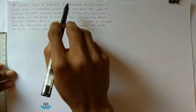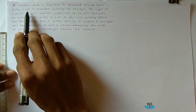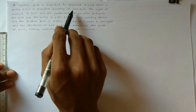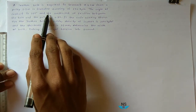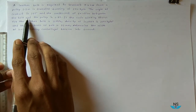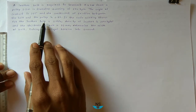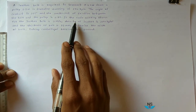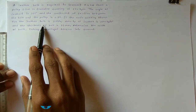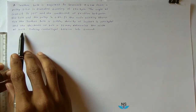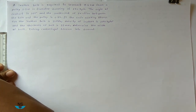A leather belt is required to transmit 7.5 kW from a pulley 1.2 meter in diameter running at 250 rpm. The angle of contact is 165 degrees and the coefficient of friction between the belt and the pulley is 0.35. If the safe working stress for the leather belt is 2 MPa, density of leather is 1050 kg per meter cube, and the thickness of belt is 10 mm, determine the width of belt taking centrifugal tension into account.